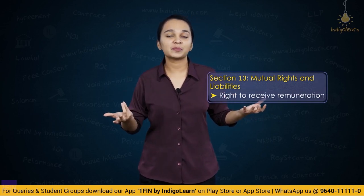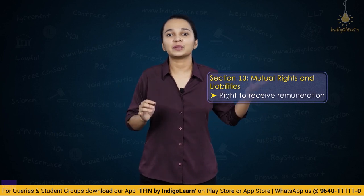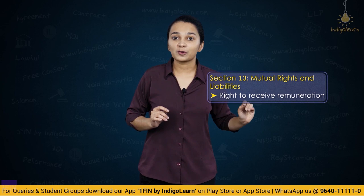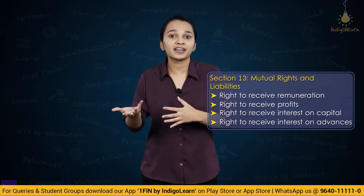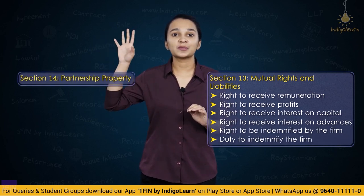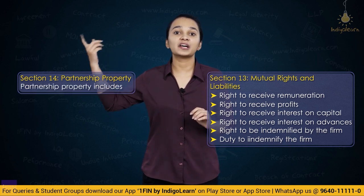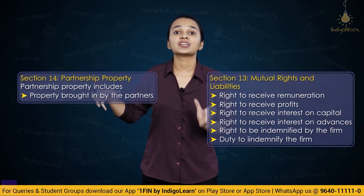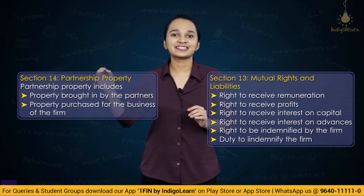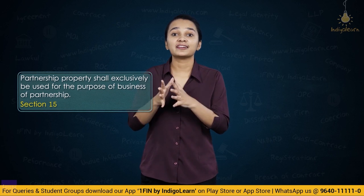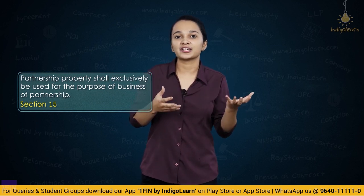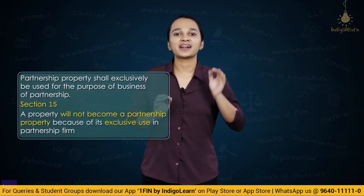Section 13 talks about mutual rights and liabilities of partners. A partner is generally not entitled to remuneration but can be paid if expressly agreed upon. He has a right to share profits, receive interest on capital, interest on advances, and to be indemnified by the firm. Section 14 talks about partnership property — property brought in by partners, property purchased specifically for the partnership, and goodwill. Partnership property must be exclusively used for the purpose of the business, as per section 15. If a partner's personal property is used for the partnership, it does not make it partnership property.